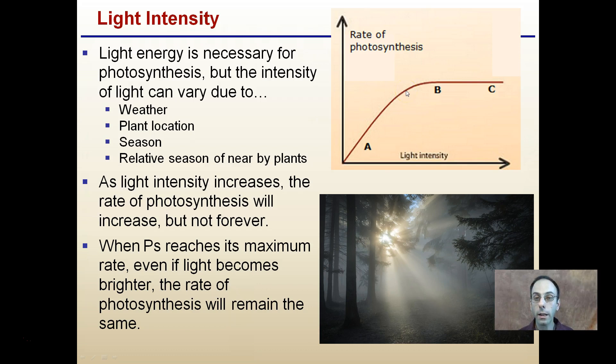However, this is not continuous and forever. When we reach here our maximum rate, even if the light becomes brighter, from B to C the light is brighter, the rate of photosynthesis will remain the same. We reach that plateau or that maximum rate.